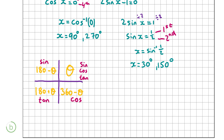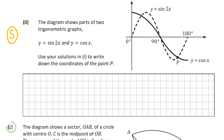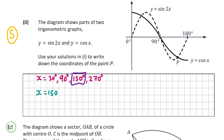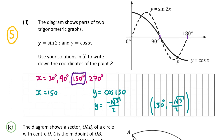That's our answer for B part 1. Now for B part 2, worth 5 marks. The diagram shows parts of two trigonometric graphs: y equals sine 2x and y equals cos x. We use our solutions from part 1 — x equals 30, 90, 150, and 270 degrees. Point P falls between 90 and 180, so the only valid value is x equals 150. The y value: y equals cos(150) equals negative square root of 3 over 2. So the coordinates of P are (150°, −√3/2).